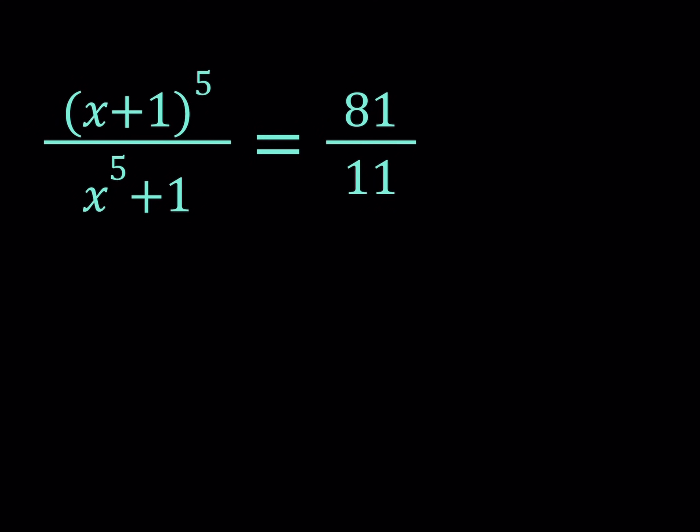Hello everyone. In this video we're going to be solving a quintic equation. We have the quantity x plus 1 to the 5th power divided by x to the 5th plus 1, and that is equal to 81 over 11, and we're going to be looking for x values — real and complex. So let's get started.